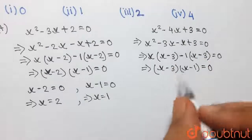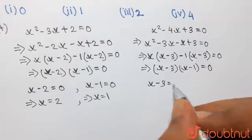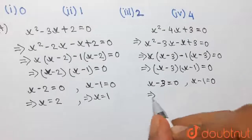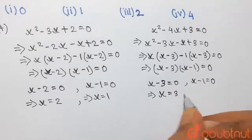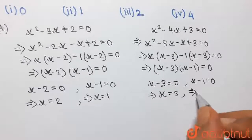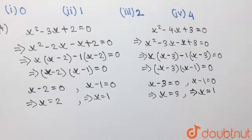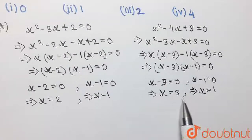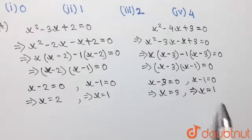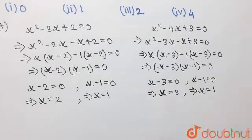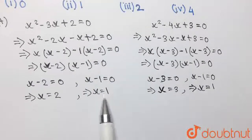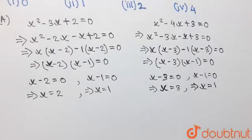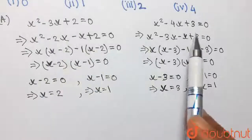The two values of x from this equation are obtained by equating x-3=0 and x-1=0, giving x=3 and x=1. So as per the first equation, x can be 2 or 1, whereas as per the second equation, x can be 3 or 1. The common value of x obtained from both equations is 1, because x=1 is a solution of both equations. Therefore, we can conclude that x=1.